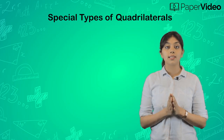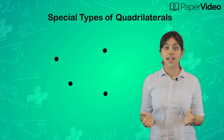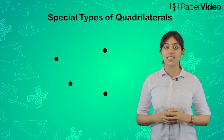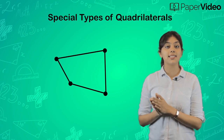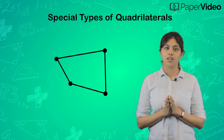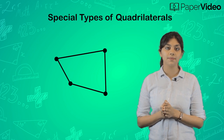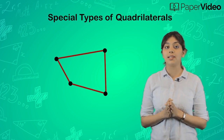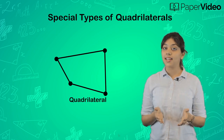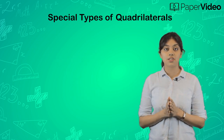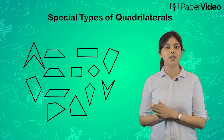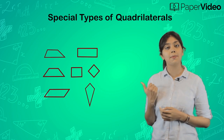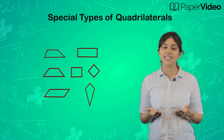Special Types of Quadrilaterals. Suppose there are 4 points on a plane such that none of the 3 points out of these are collinear. If we join these points pairwise, we get 4 line segments that do not intersect except at their endpoints. This figure is made up of 4 such line segments and we call it a quadrilateral. There are various types of quadrilaterals that we can draw on a plane depending upon the position and length of the sides and interior angles. Out of these, there are some special types of quadrilaterals which we will discuss in this video.